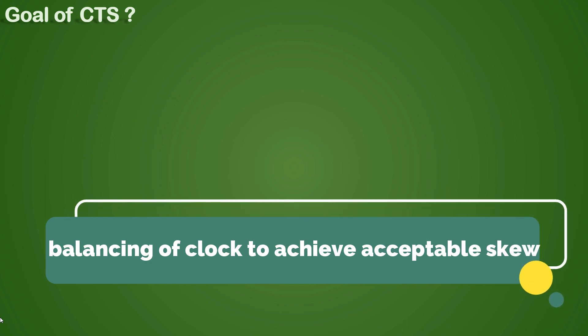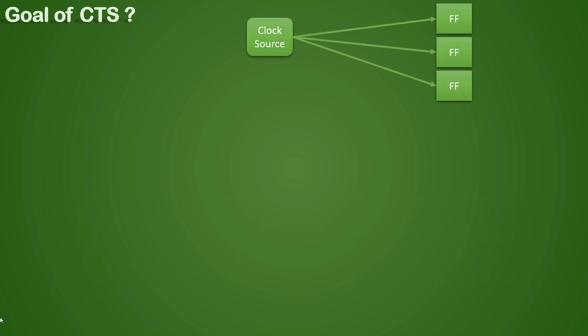The next question that comes to mind is what is the goal of CTS or what are we trying to achieve in CTS? By doing clock tree synthesis, we are trying to balance the clock skew to an acceptable range. Clock is a high fan-out net and it is necessary to balance the clock skew properly. If we do not do that, we might run into congestion, timing, or power issues later on.